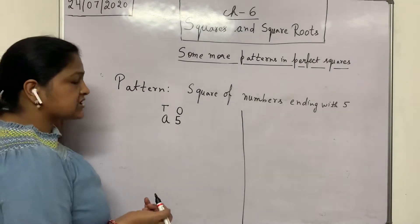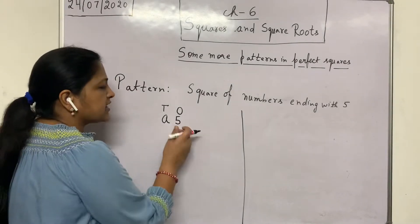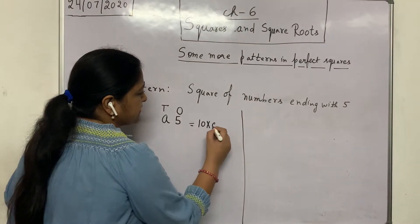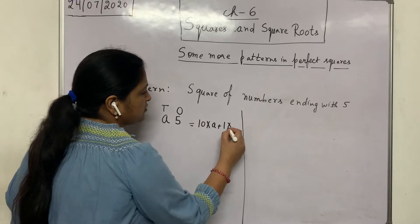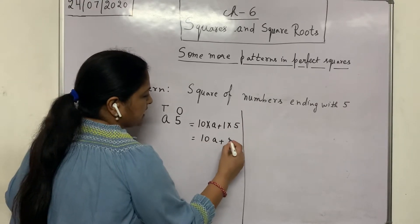In chapter 2 in linear equations you have already learnt how to write a 2-digit number in its general form. That is 10 into tens place digit plus 1 into ones place digit. This means it is 10a plus 5.